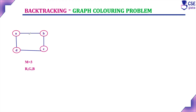Consider a graph with four vertices A, B, C, and D. Vertex A is adjacent to B and D; vertex B is adjacent to A and C; vertex C is adjacent to B and D; and vertex D is adjacent to A and C. We need to color this graph with M equal to 3, meaning three colors are given: red, green, and blue. We must satisfy the constraint that no two adjacent vertices have the same color.